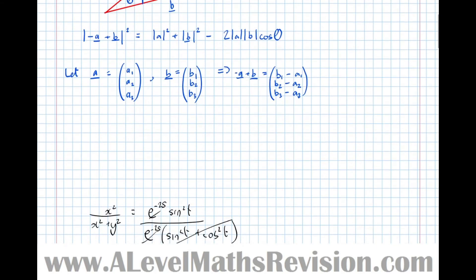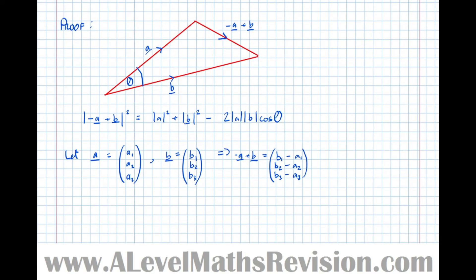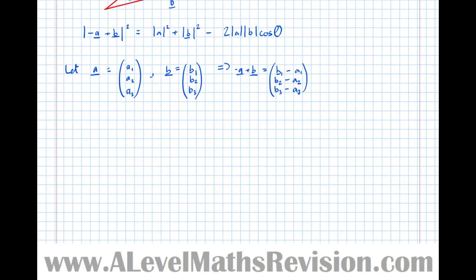So let's find the moduli that we need. The length of A squared equals, using Pythagoras, A1 squared plus A2 squared plus A3 squared. The length of B squared — remembering to underline the vectors — equals B1 squared plus B2 squared plus B3 squared.